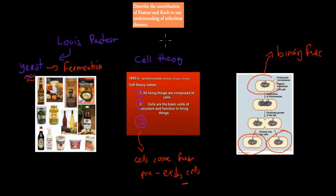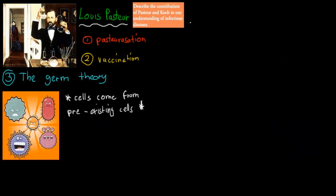The reason I'm mentioning all this is because the dot point says: describe the contributions of Pasteur and Koch to our understanding of infectious disease. So Pasteur helped us come up with the pre-existing cell theory, and I'm going to connect that to infectious disease and how they're linked. Let's start with Louis Pasteur.